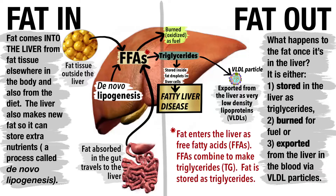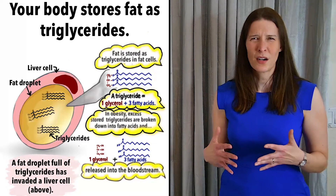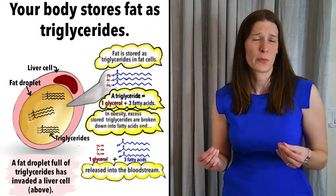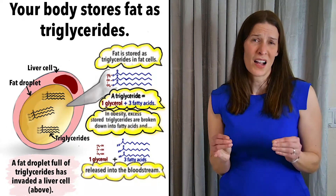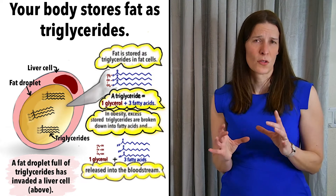So how can the liver get rid of its fat? It can export fat as very low-density lipoproteins, or VLDL, which then travel to the rest of the body through the bloodstream. It can also break down or oxidize fat in the mitochondria for energy. Finally, the liver can store fatty acids as relatively harmless and inert triglycerides — the storage form of fat — inside liver cells in lipid droplets.